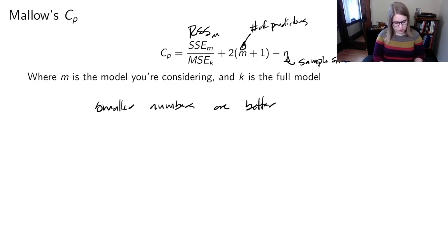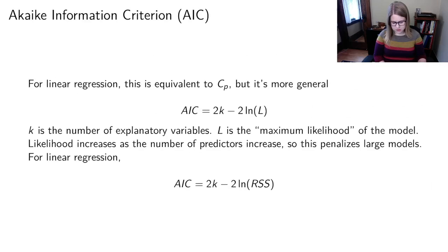So we've got two more methods for variable selection. One is Akaike information criterion, AIC. That's named after the Japanese statistician who developed this method for comparing models. And for linear regression, the AIC is actually equivalent to the Mallow's CP, but it's a more general method. So the formula for AIC is two times K, the number of explanatory variables, minus two times the log of the likelihood.